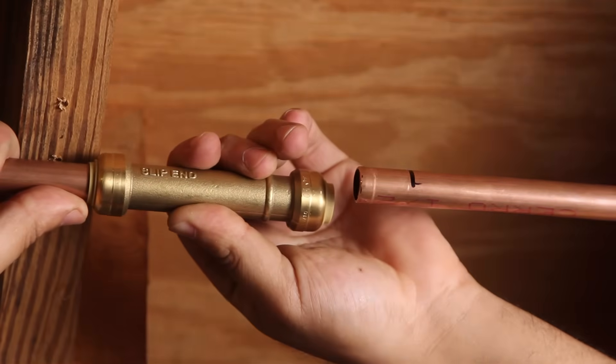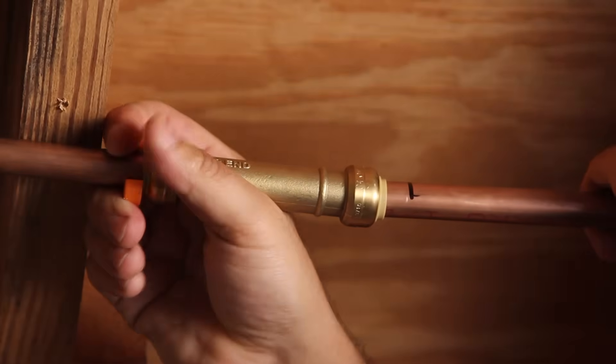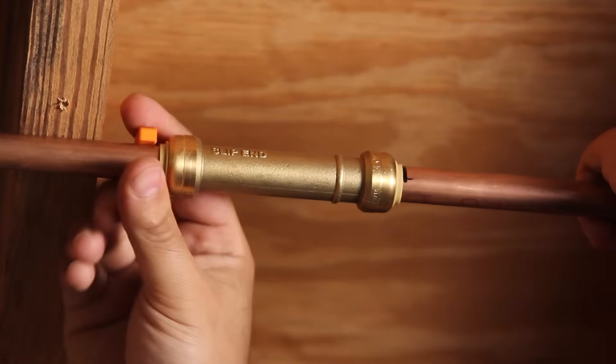Using a disconnect clip on the slip end of the fitting, slide the coupling back over the adjoining piece of copper until it clicks and reaches the correct depth gauge mark. Do not withdraw the slip end any further than the depth gauge mark.